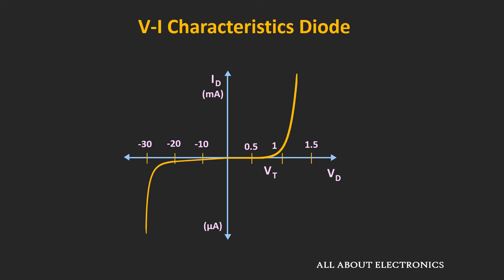Looking at the VI characteristic graph, it may appear symmetrical in both directions, but don't be confused — the positive and negative axes have different scales. On the positive y-axis the scale is in mA, while on the negative y-axis it is in µA. On the positive x-axis, voltage varies like 0.5V, 1V, 1.5V, while on the negative x-axis it varies like –10V, –20V, –30V. Because of these different scales, the characteristics look symmetrical, but if you use the same scale on both axes, the reverse-direction current is almost negligible.